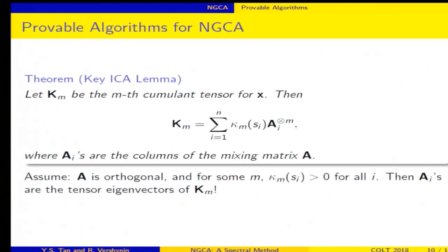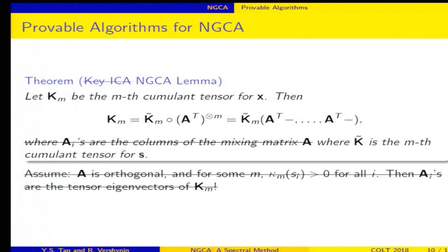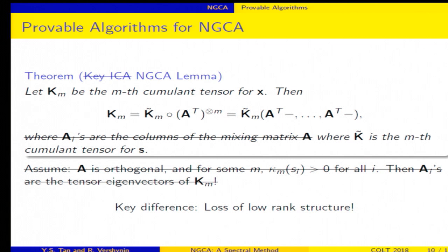Alright, so here's the key ICA lemma again. So unfortunately, it no longer holds for NGCA. Okay, so the formula disappears, you still have some formula, but we lose this low-rank decomposition. Okay, so we lose the crucial low-rank decomposition, which means that maybe some of the algorithms are no longer going to work anymore.